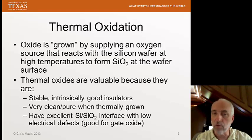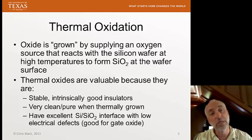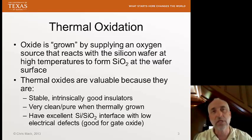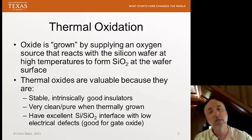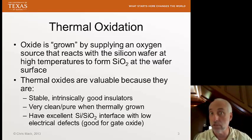These oxides are very valuable because of their quality — not just their properties as an insulator, but their quality as good insulators. They're stable and intrinsically good in that regard, and when we grow them they grow very clean and pure. Perhaps most importantly, because we're growing rather than depositing a layer on top of the silicon, the interface between silicon and silicon dioxide starts at the top and goes down as growth proceeds, occurring at a layer of silicon buried inside the wafer. The result is an extremely clean interface, and especially in the gate structure, a clean interface between silicon and silicon dioxide results in good electrical properties.